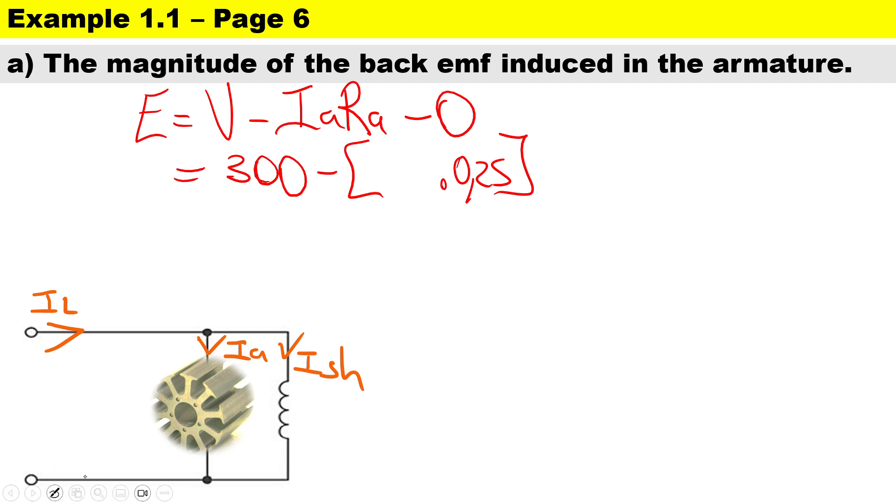For a shunt motor, IA equals IL minus I shunt. To calculate the supply current, it's going to be power over voltage because it's a DC circuit. Then calculate the shunt current, V over R shunt.